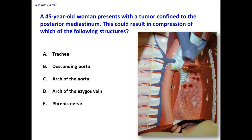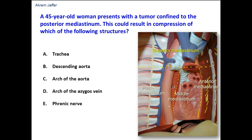It divides the mediastinum into a superior mediastinum and inferior mediastinum. The inferior mediastinum is further subdivided into three areas: a narrow area located anteriorly called the anterior mediastinum; a middle region which contains the heart and the beginning of the great vessels enclosed in the pericardium, called the middle mediastinum; and posteriorly located is the posterior mediastinum. So the posterior mediastinum is part of the inferior mediastinum — the posterior part — and it is in continuation with the superior mediastinum.